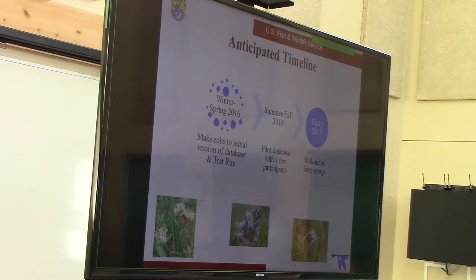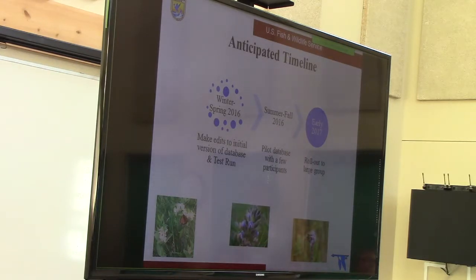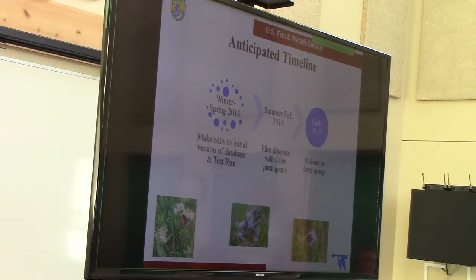What is our timeline? Currently we are working this winter and spring to make edits to the initial version of the database and then do a test run. In summer and fall of 2016, we anticipate the database will be ready to pilot — we'll have a couple of folks put some real-world data in and see if there are any bugs to iron out. We expect that by early 2017 this will be ready for prime time and rolled out to whoever wants to use it.